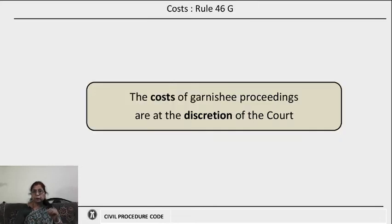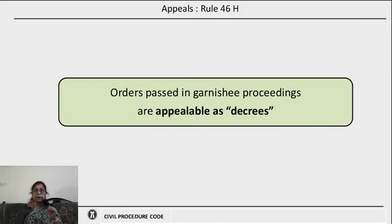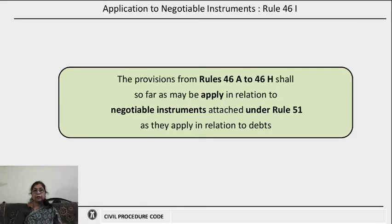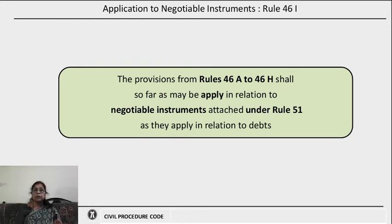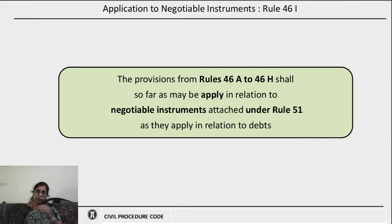Rule 46G says that all costs of garnishee proceedings are to be decided at the discretion of the court, which will decide who is to pay the costs of these proceedings. Rule 46H says that orders passed in garnishee proceedings are deemed to be decrees and are therefore appealable just as one would appeal against a decree. Rule 46I says that the provisions from Rules 46A to 46H shall, so far as may be, apply in relation to negotiable instruments attached under Rule 51. Under Rule 51, negotiable instruments not in the custody of the court can be attached by actual seizure, and similarly the same rules — 46A to 46H — shall apply to negotiable instruments as they apply in relation to debts.